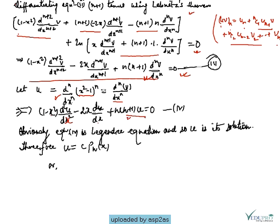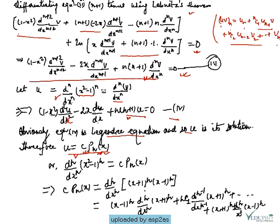Now let u = d^n/dx^n of (x²-1)^n, which equals d^n v/dx^n. Substituting this value of u into equation 3, we get: (1-x²) d²u/dx² minus 2x du/dx plus n(n+1)u = 0. This is equation 4, which is the Legendre equation. Since we know the Legendre equation's solution is Pn(x), and u also satisfies it, we write u = c·Pn(x), where c is a constant.